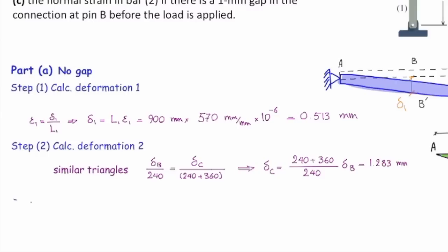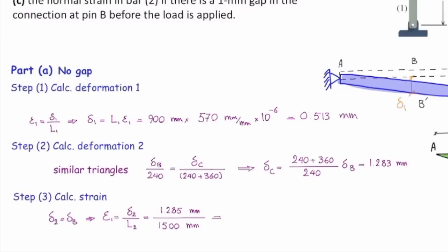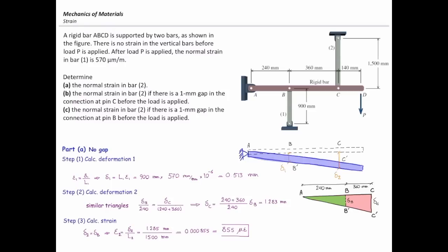Now we can determine the strain in element 2. Using the strain equation, epsilon 2 equals the change in length of element 2 divided by its initial length. The change in length equals delta C, which is 1.283 mm, and the length L2 is 1,500 mm. Plugging in the values gives 0.000855, which equals 855 microstrain. That answers Part A — no gap in the system.